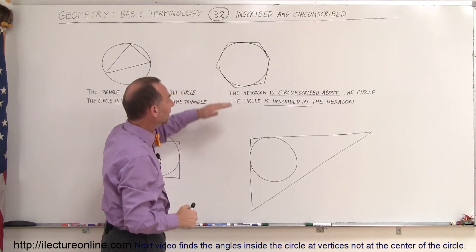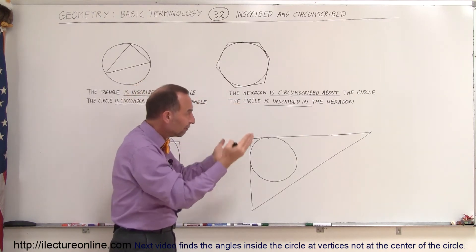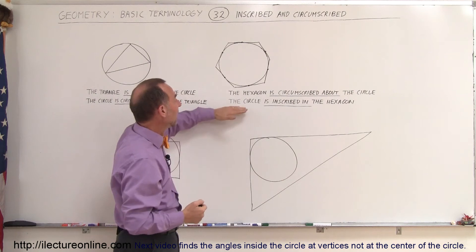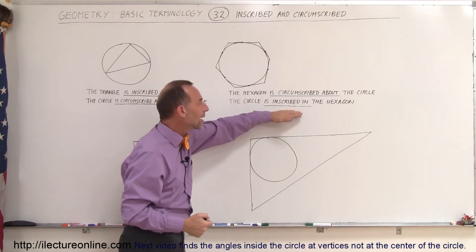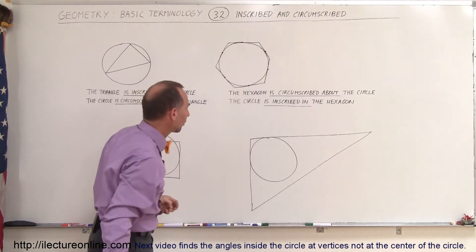And so we can say that the hexagon is circumscribed about the circle because it envelopes the circle, so to speak. And the circle is inscribed in the hexagon because it's inside. And yes, it does touch at those six locations.